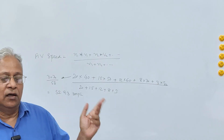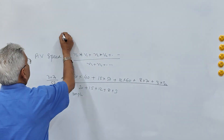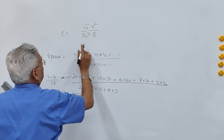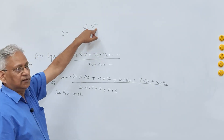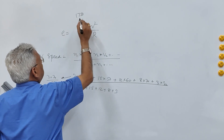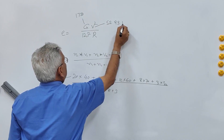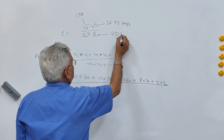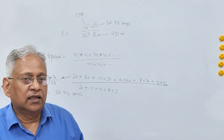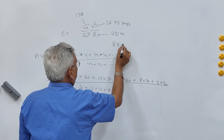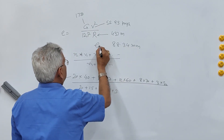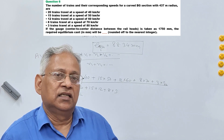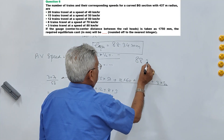Corresponding to this speed, the equilibrium cant is given by: e = G × V² / (127 × R), where G is the dynamic gauge (1750 mm), V is the equilibrium speed (52.93 km/h), and R is the radius (437 m). Substituting all values gives an equilibrium cant of 88.34 mm. Rounded off to the nearest integer, the answer is 88 mm.